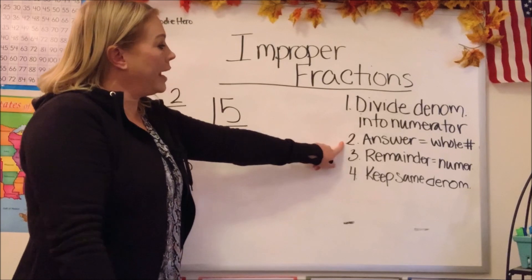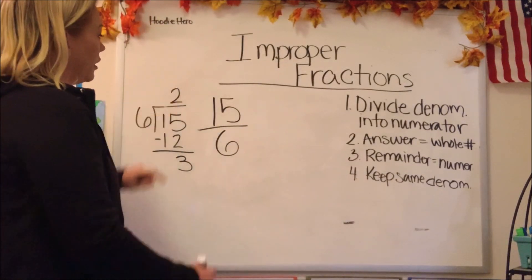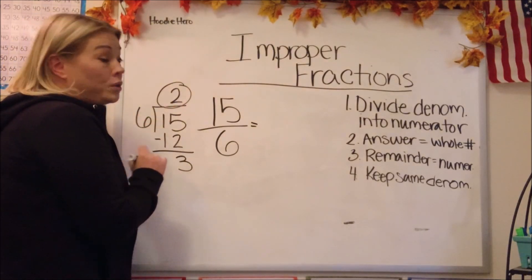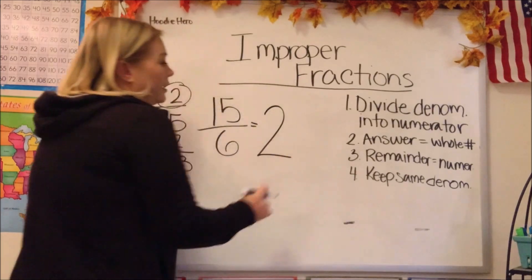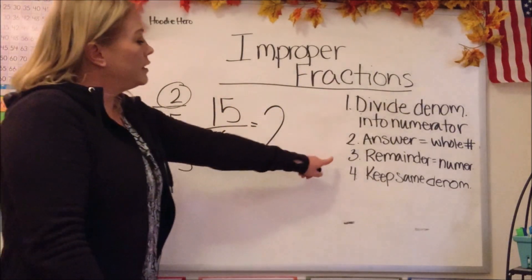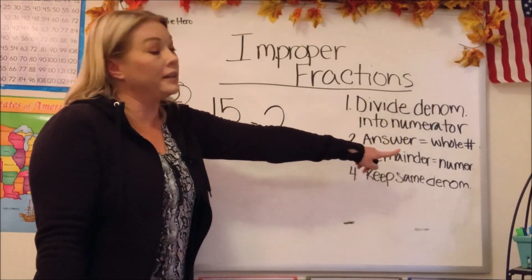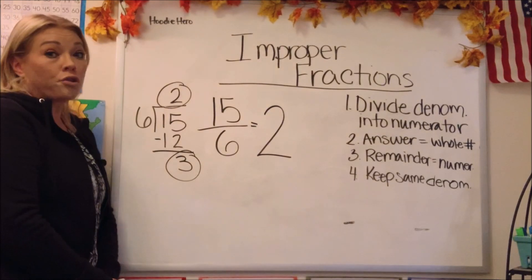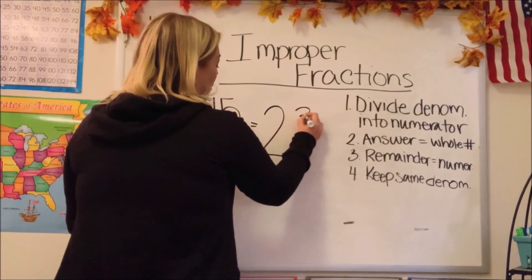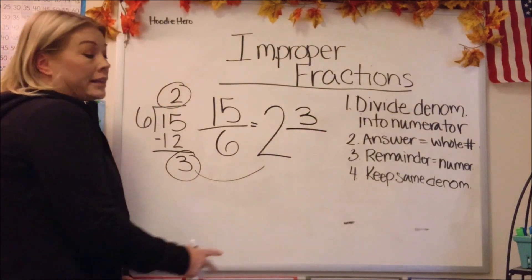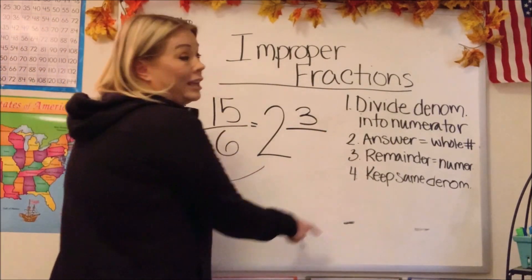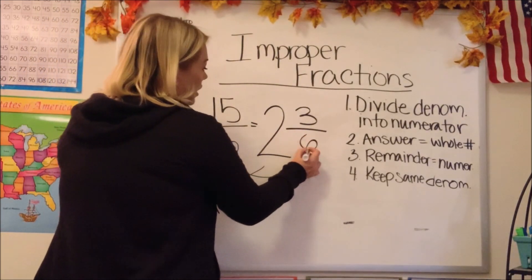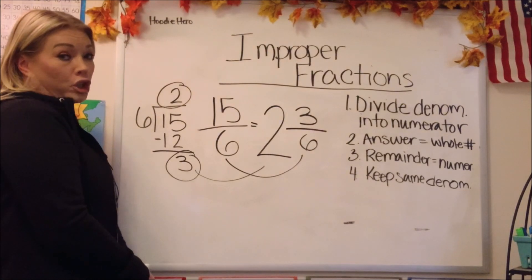Step number 2: our answer is going to be our whole number. Our answer was 2 — 6 can go into 15 two times evenly, so that 2 is going to be our whole number. Step number 3: our remainder is now our numerator. How many were left over? 3 — so that 3 is now going to become our numerator. Step 4: we keep the same denominator, which is 6. So we have 2 and 3 sixths.